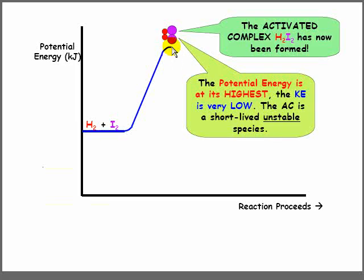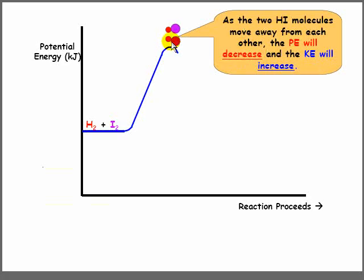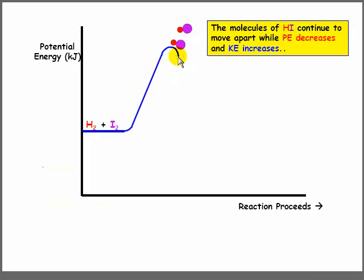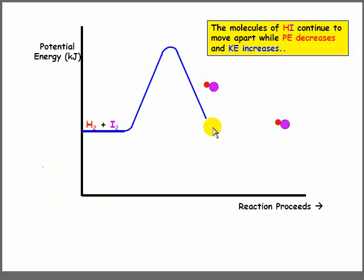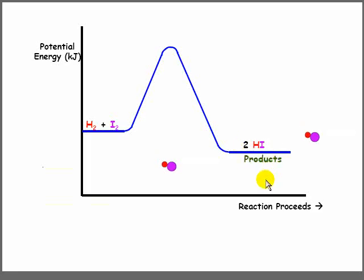Remember, the activated complex is a short lived, unstable species. If the collision was successful, the activated complex will break up into the products, which are two molecules of HI. The HI molecules start moving apart from one another. As they move apart, their potential energy decreases, as you can see by the blue line. As their potential energy decreases, their kinetic energy increases. Sooner or later, they form the stabilized products — two molecules of HI — with low potential and high kinetic energy.